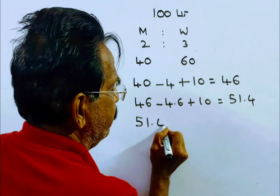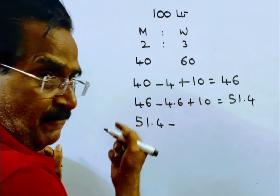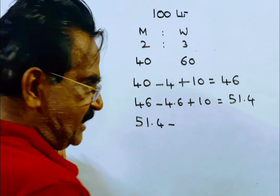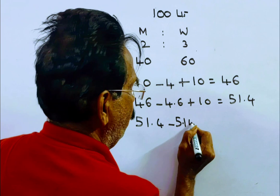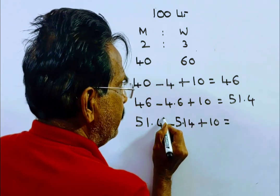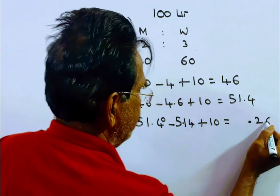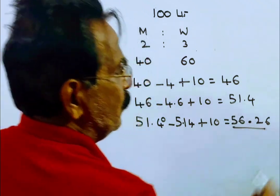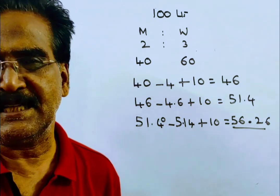Now the third operation: 10% of the mixture is drawn, meaning 10% of the milk is drawn. 10% of 51.4 is 5.14. So 51.4 minus 5.14 is 46.26, plus 10 is 56.26. The quantity of the milk after the third operation is 56.26 liters.